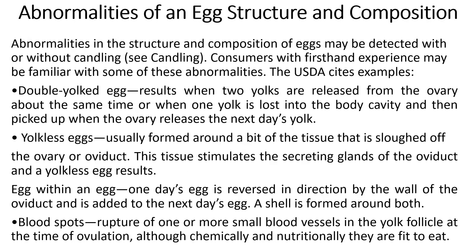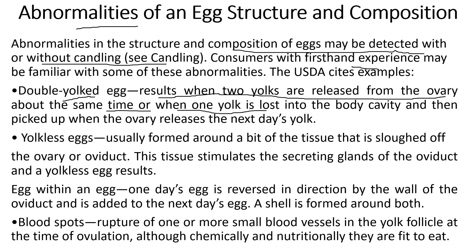Now, discussing some abnormalities in egg structure and composition — some abnormalities may be detected with or without candling, and consumers with first-hand experience may be familiar with them. The USDA cites several abnormalities, the first being the double yolk egg. This occurs when two yolks are released from the ovary on about the same day, or when one yolk is lost into the body cavity and picked up when the next day's yolk is released. This is a very rare occurrence.